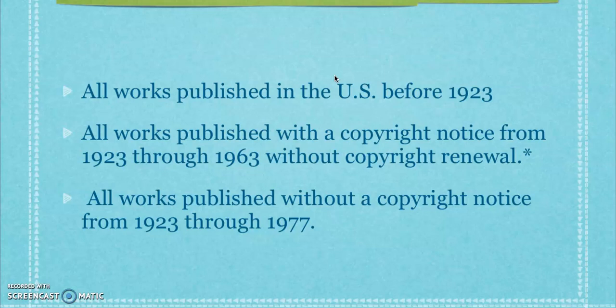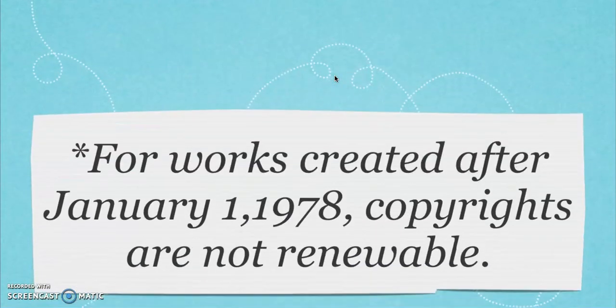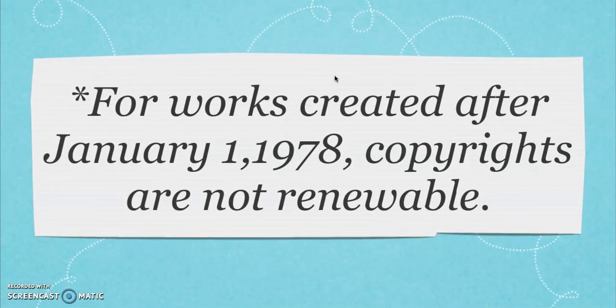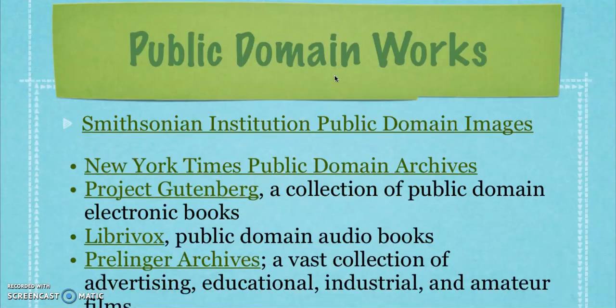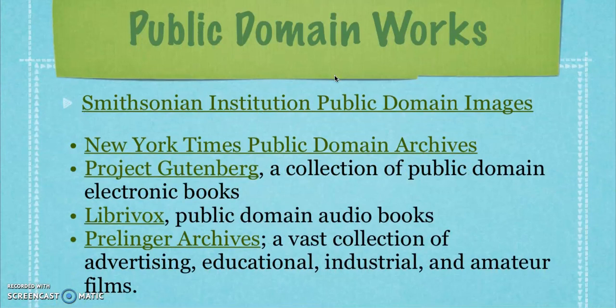All works published with a copyright notice from 1923 through 1963 without a copyright renewal are also considered in the public domain. Any work published without a copyright notice from 1923 through 1977 is considered in the public domain. For works created after January 1st, 1978, copyrights are no longer renewable.